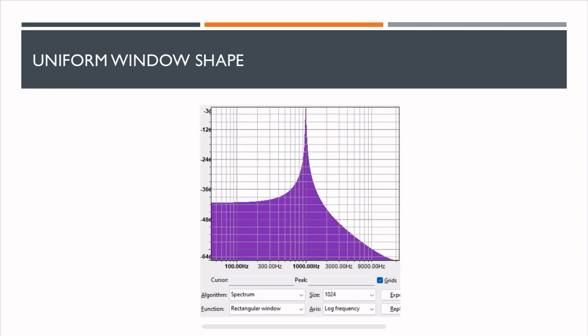This is a uniform window shape or rectangular window and this is how it looks like. If it has been applied on a non-periodic signal, then you can see that there is this main lobe which captures 1 kHz, but there is really bad spectral leakage because there are too many side lobes here.